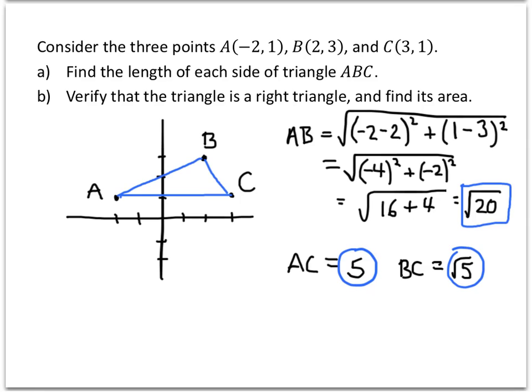For part B, they ask us to verify that the triangle is a right triangle. Remember, for a right triangle we have the relationship a² + b² = c² — the sum of the squares of the legs equals the square of the hypotenuse. The first challenge is figuring out which side is the hypotenuse, or where the right angle is. Looking at our picture, it looks like the right angle is most likely at point C, since that angle looks much more like a right angle than the other two.